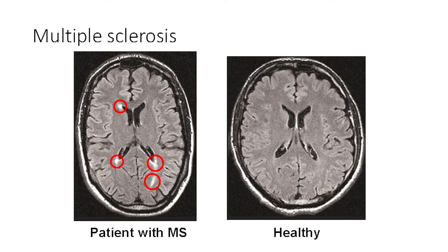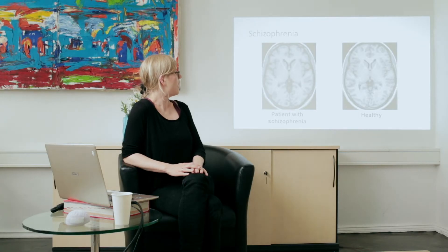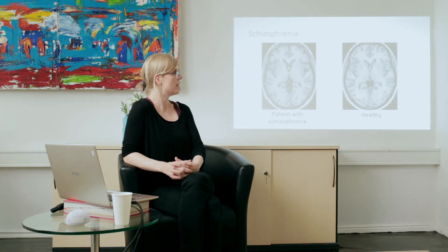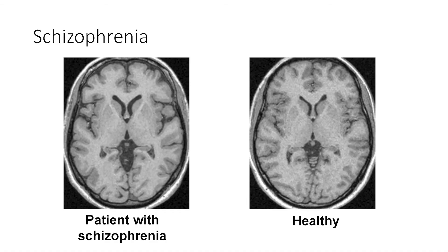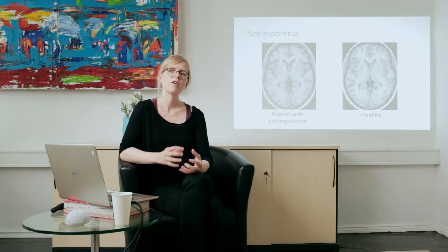CNNs are applied in neuroimaging, with input data mostly being structural MRI. There are already some applications, mostly in Alzheimer's disease but also in other diseases. The main question is whether deep learning is better than classical machine learning. At the moment we can't really tell — some studies show higher accuracies with deep learning, others show results on par with classical machine learning, and some argue that with current sample sizes we don't really benefit from deep learning approaches.